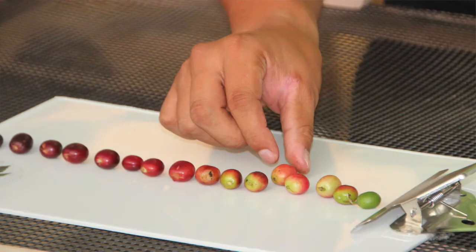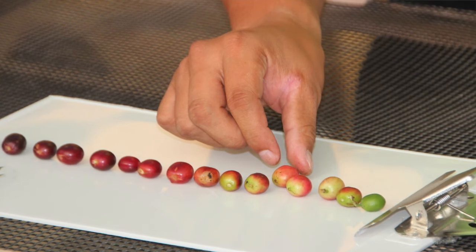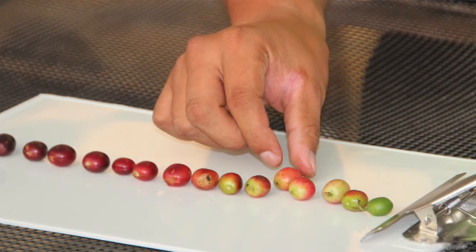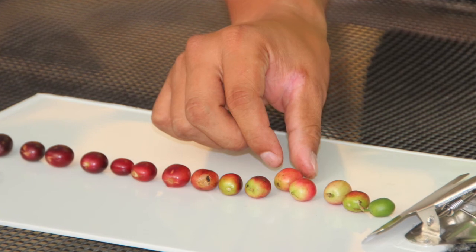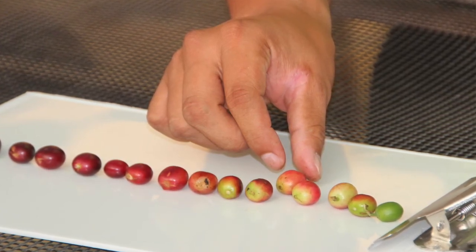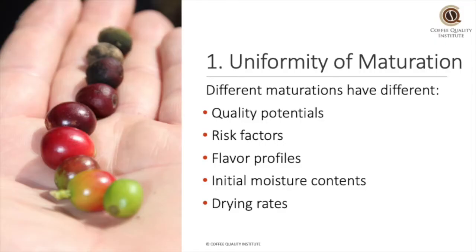We should seek to process coffee of uniform maturation. In other words, you should separate out different maturations into different lots before processing. Here are some of the reasons why. First, different maturation levels have different risk factors during post-harvest processing. For instance, unripe coffee has a much higher chance of forming the black defect if it is exposed to higher drying temperatures. Dried-on-tree coffee has a higher risk of bringing mold from the field to the wet mill.